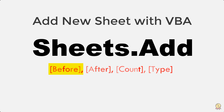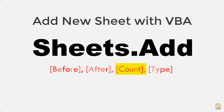The first argument is 'before' — if you want to add a sheet before an existing sheet, you need to define this argument. The second is 'after' — if you want to add a sheet after a specific existing sheet, define this argument. The third argument is 'count', where you define how many sheets you want to add. The last is 'type', where you define the type of sheet — in Excel we have different types like a worksheet, a chart sheet, or a macro sheet.